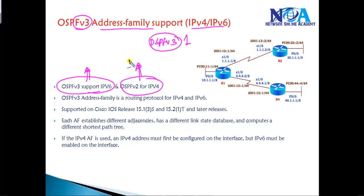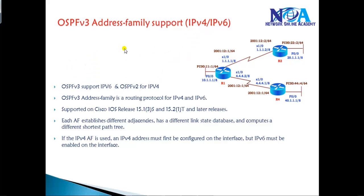In previous versions, you would use 'router ospf 1' for IPv4, and then 'ipv6 router ospf 1' as a totally separate process for IPv6. With OSPFv3 address family support, the same process runs for both IPv4 and IPv6. This feature has been available from IOS version 15.1 to 15.2.